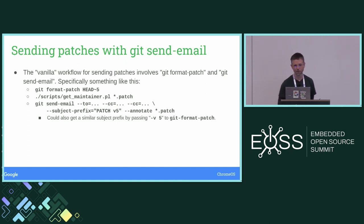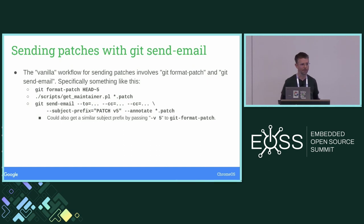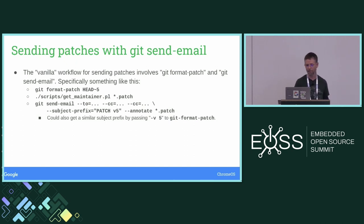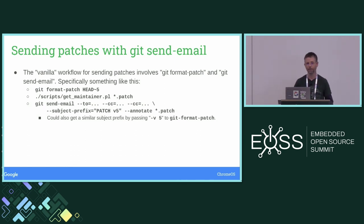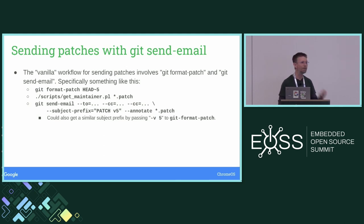The vanilla way, if you don't use any tools, is you use git format-patch to get your patch in a format ready to email out. Then you figure out who to send it to, probably by using the get_maintainer script in the kernel. Then you use git send-email and manually copy the results from get_maintainer to the to and CC args, and maybe add a bunch of other args like subject prefix. So you type in a big long command line to mail out your patches.